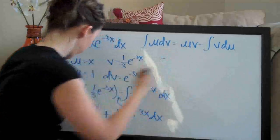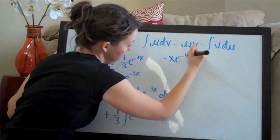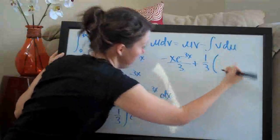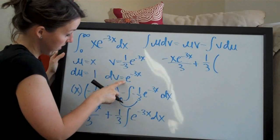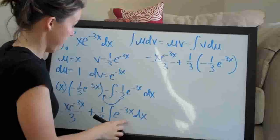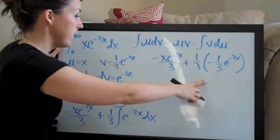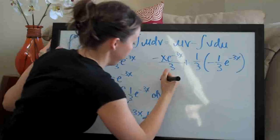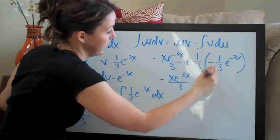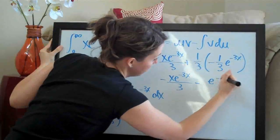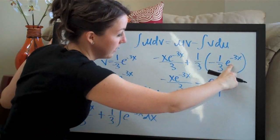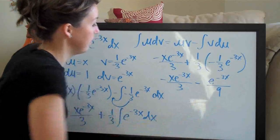We rewrite the front as negative x e to the negative 3x over 3, plus one-third. The integral of e to the negative 3x is negative one-third e to the negative 3x, the same as before. Now simplifying — since we have a positive times a negative — we end up with negative x e to the negative 3x over 3, minus e to the negative 3x over 9. That is our final integral.